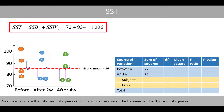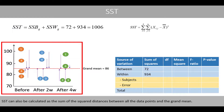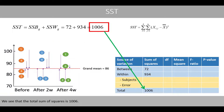Next, we calculate the total sum of squares, SST, which is the sum of the between and within sum of squares. SST can also be calculated as the sum of the square distances between all data points and the grand mean. We see that the total sum of squares is 1006.